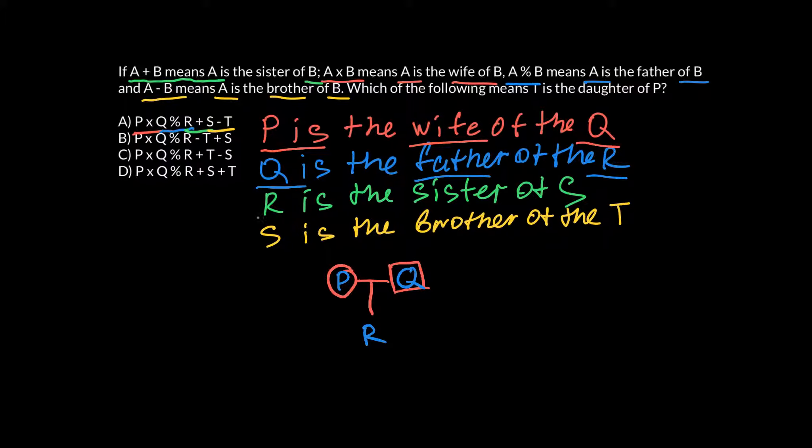And the next statement, we see that R is a sister of S. So R is a sister. And we should add another child here. So we put S here. And in next statement, S is a brother of T. So S should be in the box. And he is a brother of T. So we should add another child here, who is going to be T. But sex of the child is not specified. So we use this symbol.